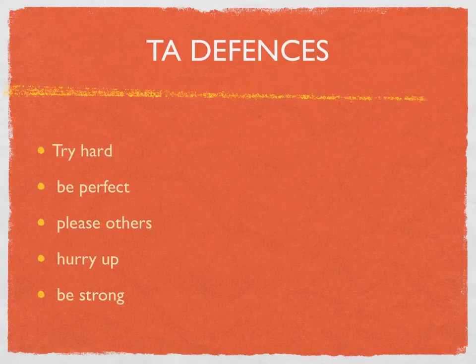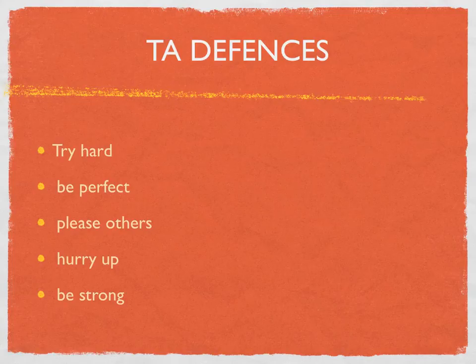Other TA defences — which are a defence against the injunctions — include: try hard, be perfect, please others, hurry up, be strong. The point for the therapist is to look at what those behavioural defences are and to work with those defences to get to the injunctions, so they can get to the early script decisions.